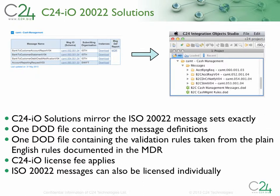Now let's talk about the licensable units of C24. These C24 modules are designed to mirror the message sets exactly. In the example shown here, the cache management message set is made up of four messages and one MDR. In C24, the message definitions are included in a single data object definition file, or DoD. Also included is a separate DoD containing the validation rules. Machine-processable validation rules are not included in the 20022 repository — rather, they are described only in plain English in the message definition report. C24 takes the time to go through hundreds and thousands of pages of documentation to encode the validation rules into the DoD. This is a significant value-add and justification for the license fee. The other primary value-add is a guarantee that the libraries will be kept up to date as the standards evolve.